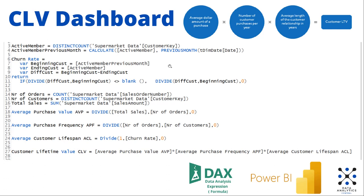Now we have to create measures in order to arrive at this formula. The first measure would be to calculate the churn rate. The churn rate is the difference of the number of customers between the ending and the beginning of the period, divided by the number of customers at the beginning of the period. You see here the formula — it divides the diff customer by the beginning customers — and you see the beginning customer, the ending customer, and the diff customer formula.